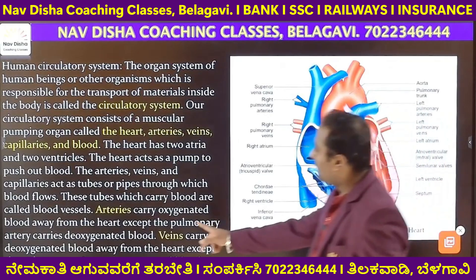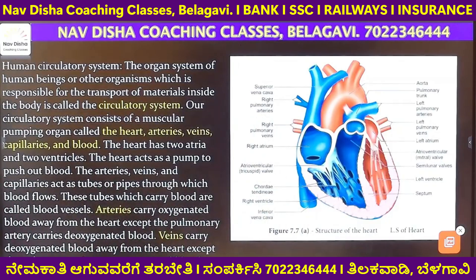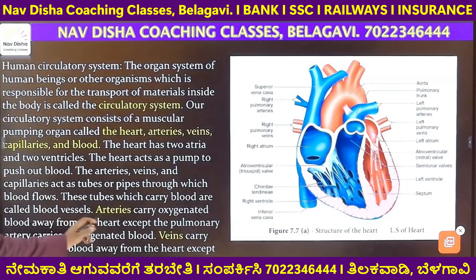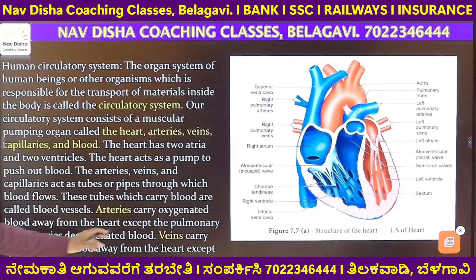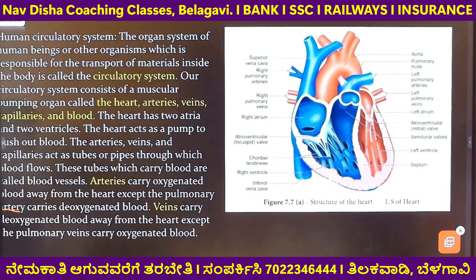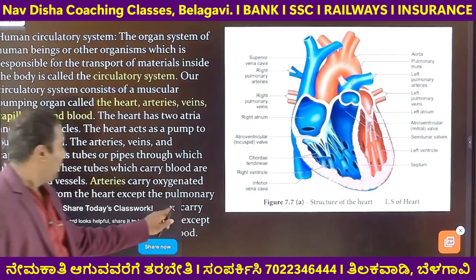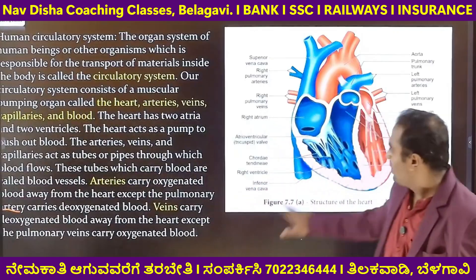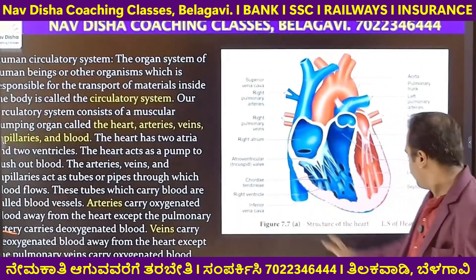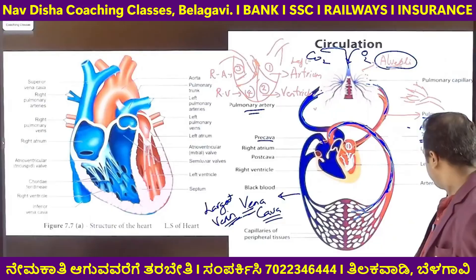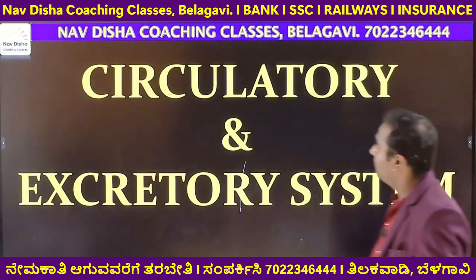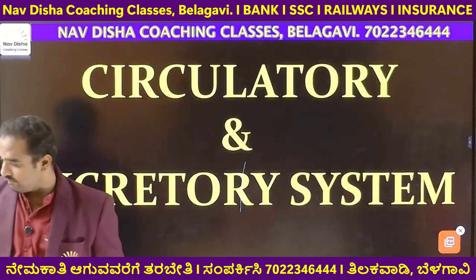Regarding arteries and veins: arteries carry oxygenated blood away from the heart, except the pulmonary artery. Veins carry deoxygenated blood toward the heart, except the pulmonary veins.